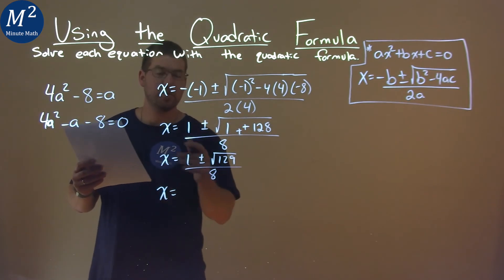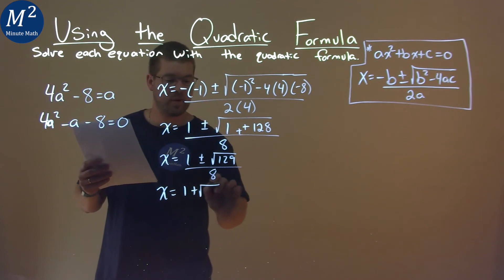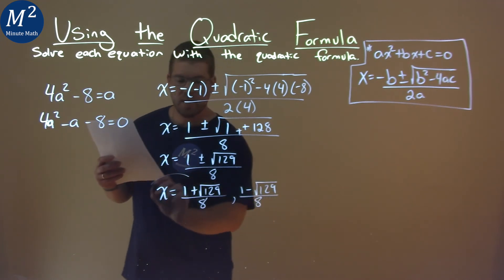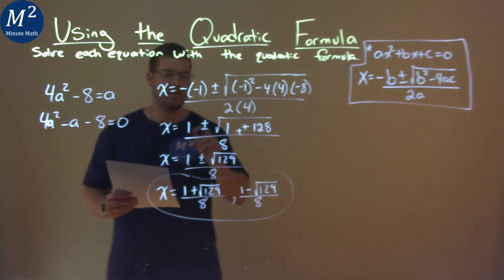So we can write this as two separate statements with a plus and minus. So, x = 1 + √129 over 8, and 1 - √129 over 8. And that is our final answer.